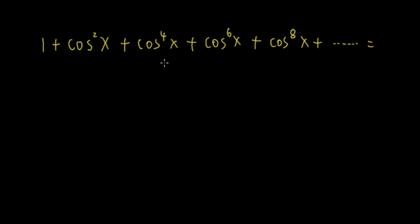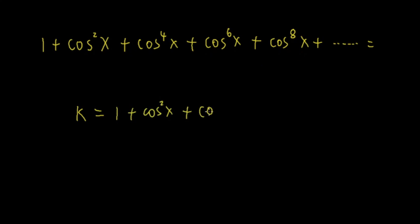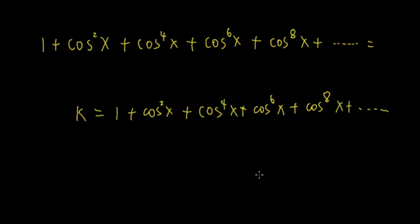Every subsequent term has a power that is 2 higher than the power of the previous term. Let's let k equal to this infinite series: 1 plus cosine squared x plus cosine to the 4th x plus cosine to the 6th x plus cosine to the 8th x, and so on. Now what if I multiply this infinite series by cosine squared x?